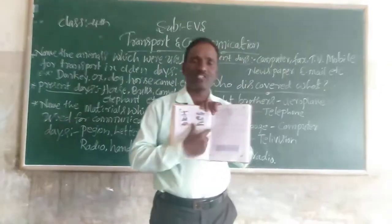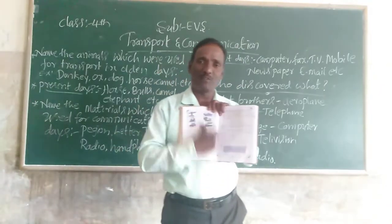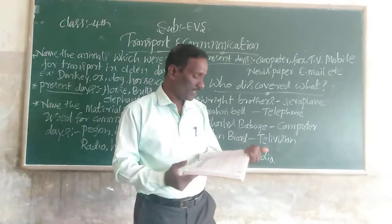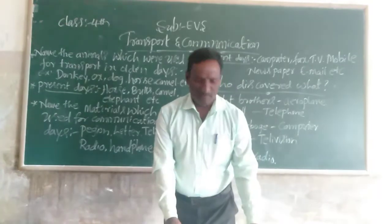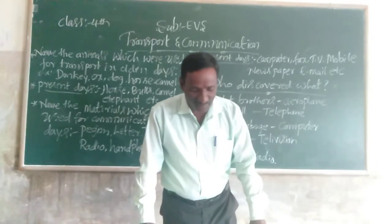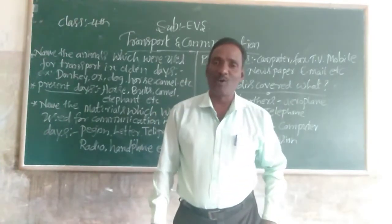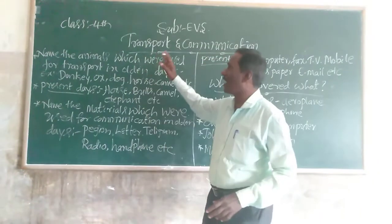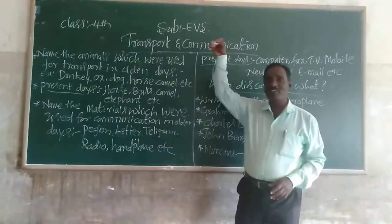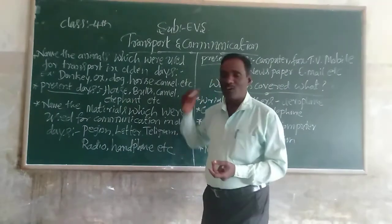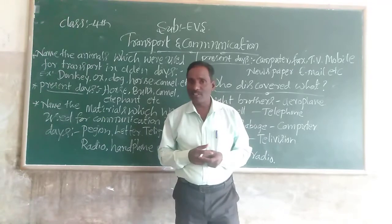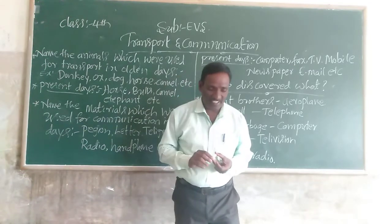Write the first one, second one, third one, fourth one in the correct order. Next: know the names of the animals which were used for transport in olden days and write them in the box given below. Name the animals used for transport in olden days — for example, donkey, ox, camel — so many animals were used for transport in olden days.